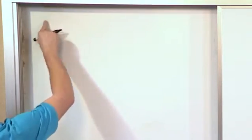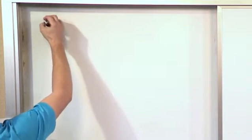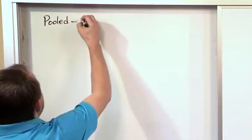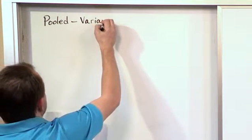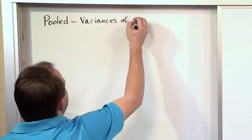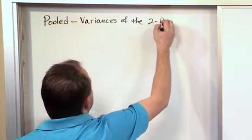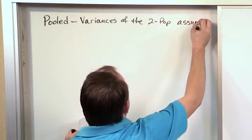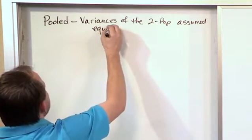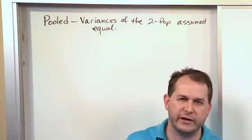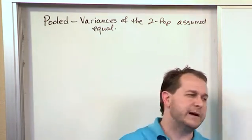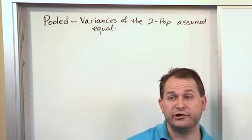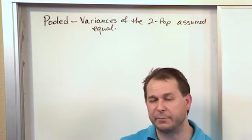You can have two classes of problems when doing this, and they lead to two different test statistics. The first one is called pooled — a pooled type of problem. That is when you assume that the variances of the two populations are assumed equal. You can never really know if the variances of two populations are equal, because a population could be a large amount of people — you might have a million people in Fort Worth as one population and a million people in Austin as another.